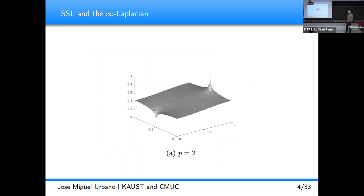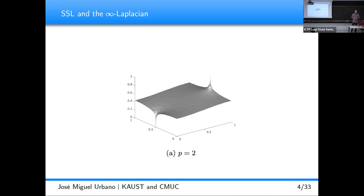If you pass to the continuous limit, what you are doing is minimizing the Dirichlet energy, the L2 norm of the gradient. Minimizers of this functional are harmonic functions — they solve the Laplace equation. But what people realize is that when you have very few labeled data, this minimization problem leads to a sort of degenerate solution. The solution becomes constant, a sort of average of the labels, and then the labels are obtained in a discontinuous fashion. This is because you are solving a problem where the minimizer lives in H1, the Sobolev space W^{1,2}, and in very high dimension, functions in W^{1,2} will not be continuous up to the boundary.